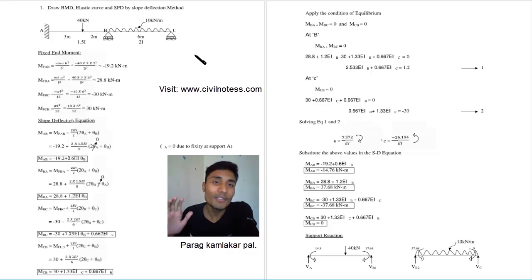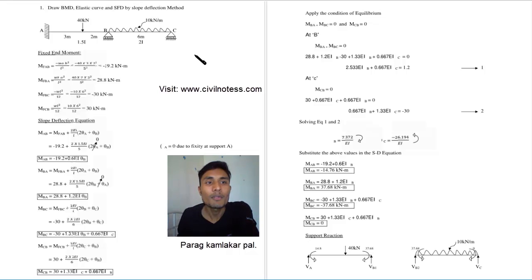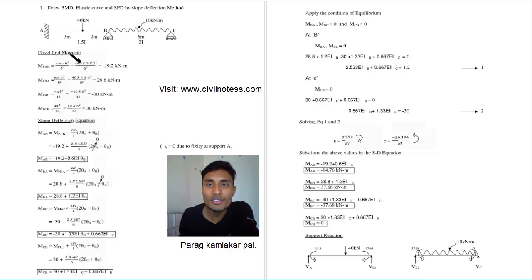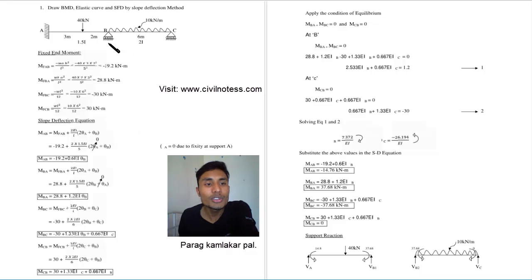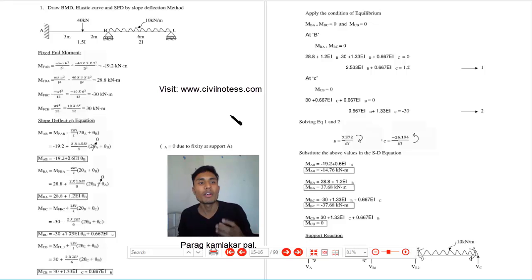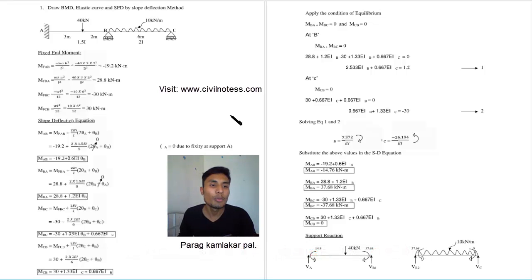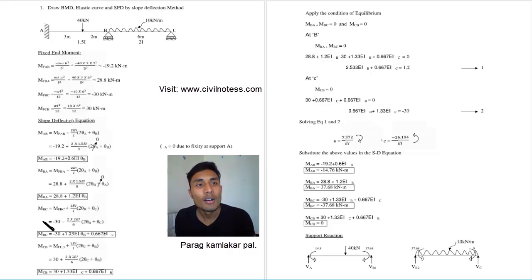For the slope deflection method we must follow a procedure. Step 1 is the fixed end moment. Step 2 is the slope deflection equation. Step 3 is to establish equilibrium conditions. From those we use the equations, solve them to get values, and then calculate the final output moments: moment AB, moment BA, moment BC, and moment CB.